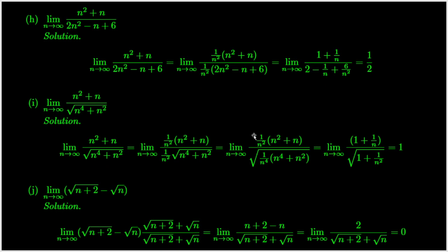We now work on question 5h. We have seen the technique when we evaluate the limit of a function at infinity: divide the numerator and the denominator of the sequence by n squared. We can find the limit.